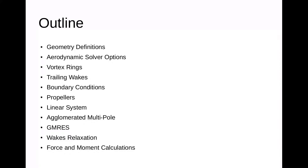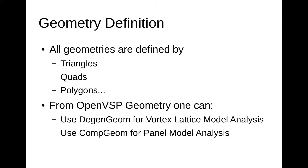We'll talk about our process using vortex rings and the trailing weight process, boundary conditions, propellers — that's part of the code. We'll discuss how we actually solve the linear system that comes out of this formulation, a little bit about wake relaxation, and then force and moment calculations. All geometries for VSPro are defined in terms of triangles, quads, and polygons. From OpenVSP we have two main paths: using the DegenGeom to generate what we call a vortex lattice model, and using the CompGeom for doing a panel model.